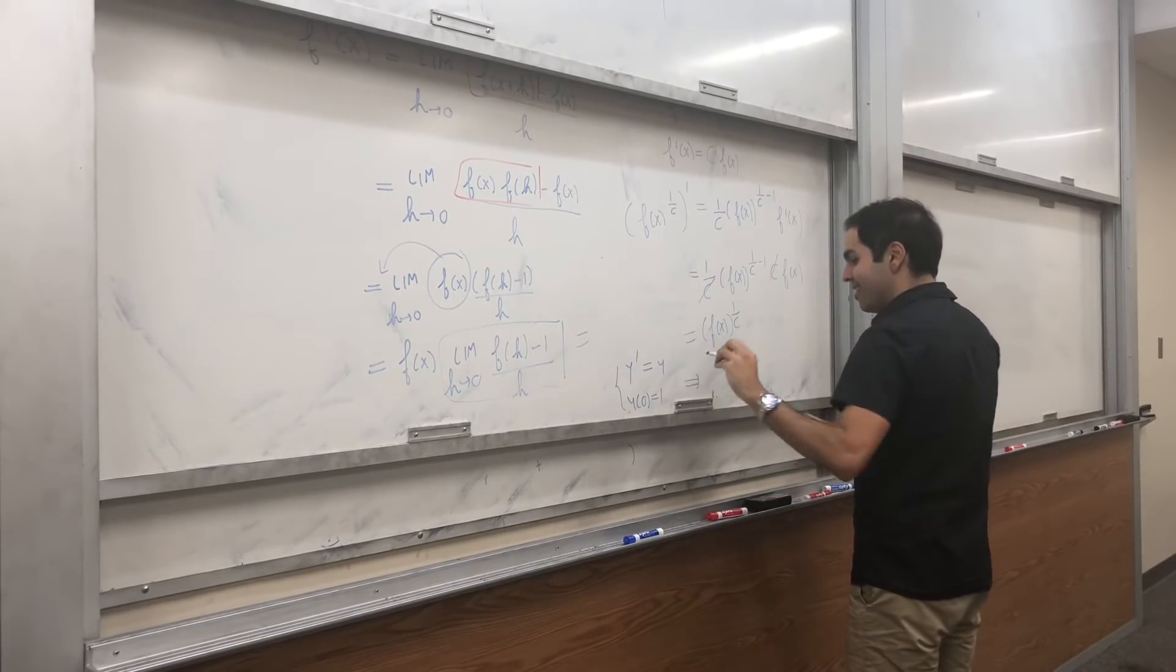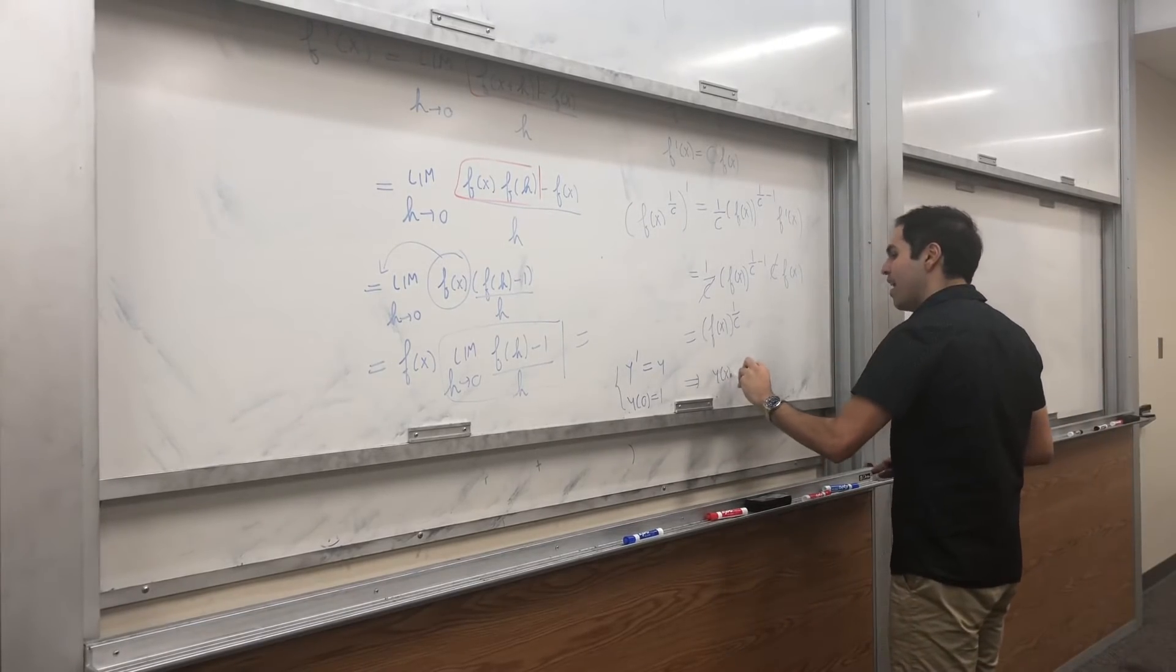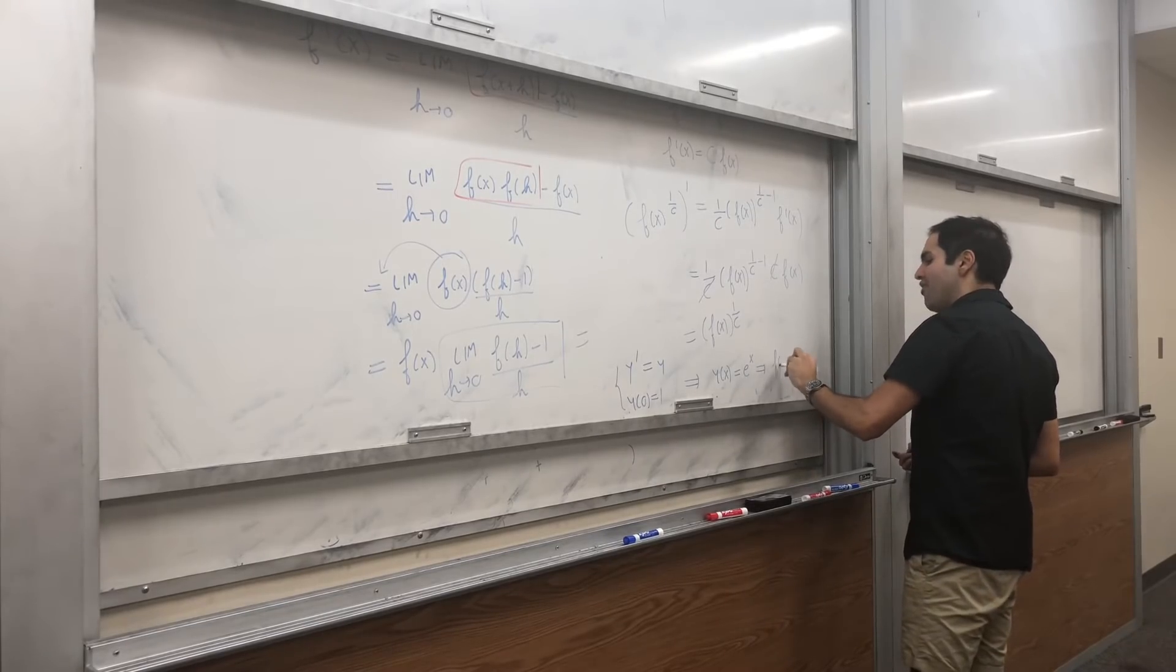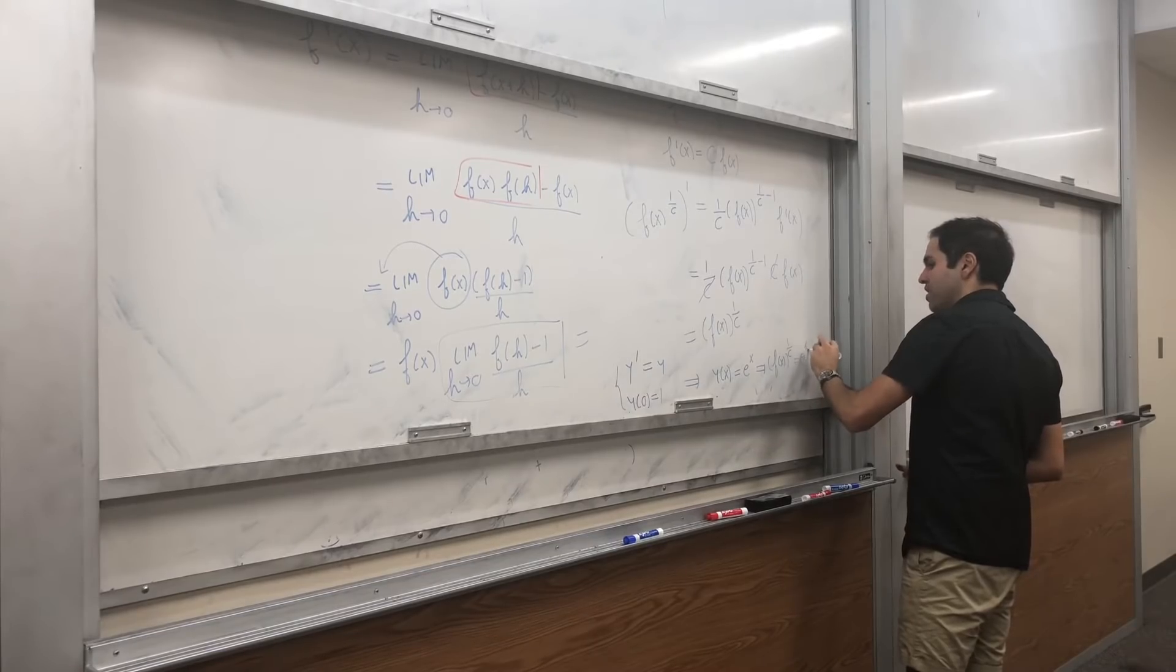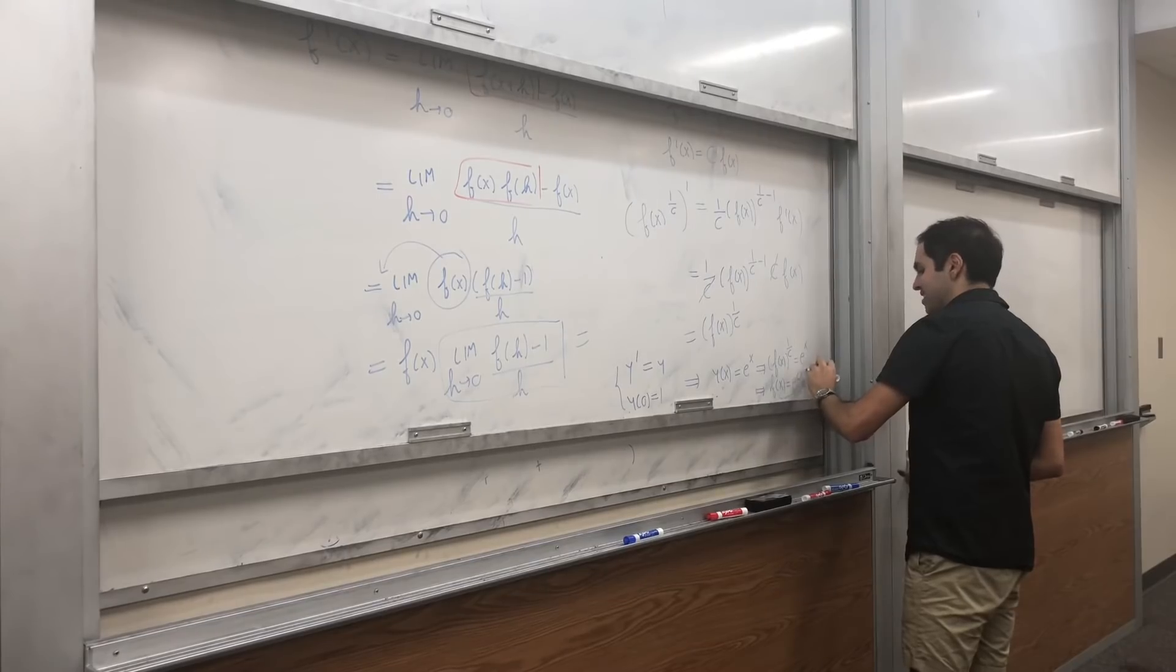And this is, by definition, the function e to the x. So y of x equals to e to the x. So f of x to the 1 over c equals to e to the x. So f of x equals to e to the cx.